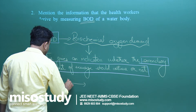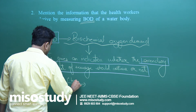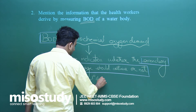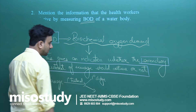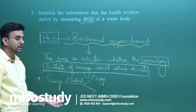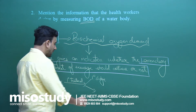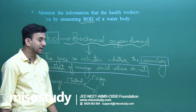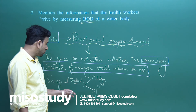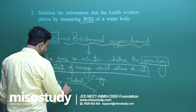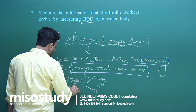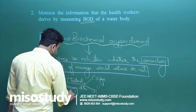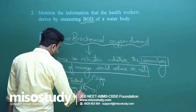When the sewage primary treatment is done, we get what we call a primary sludge — the waste — and then the primary filtrate, which will be again secondary treated. The primary treatment removes all the physical impurities, and the secondary treatment deals with what remains.